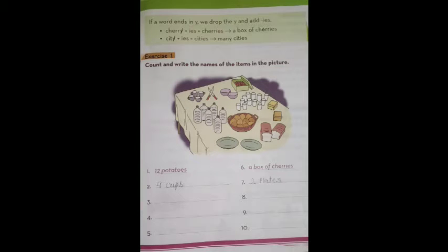Now look at your exercise. Count and write the names of the items in the picture. You have to write the items like here, 12 potatoes, a box of cherries. Now here we have cups, so how many cups are there? One, two, three, four. Four cups here. And here we have plates, one, two, so two plates. This way you will put the quantity of these like bowl, knives, bread, bottles, boxes and glass.